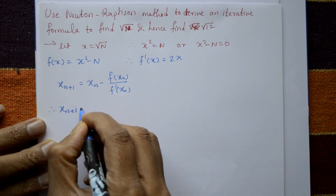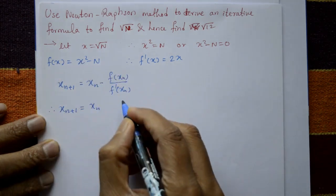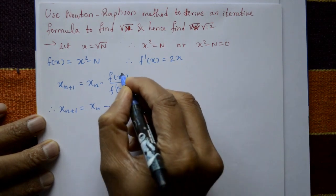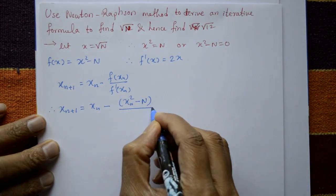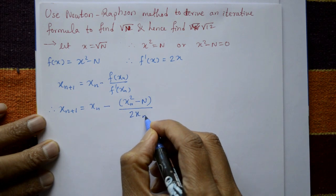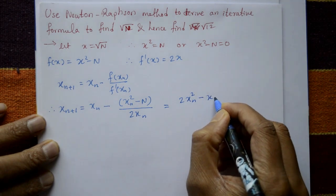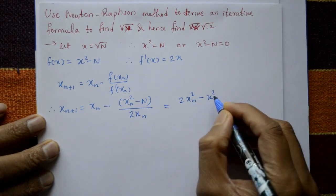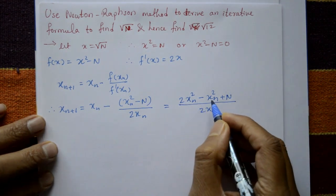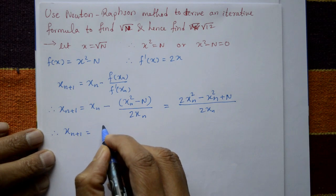So x_{n+1} = x_n - f(x_n) / f'(x_n), where f(x_n) = x_n² - n and f'(x_n) = 2x_n. This gives x_{n+1} = (2x_n² - x_n² + n) / 2x_n = (x_n² + n) / 2x_n.